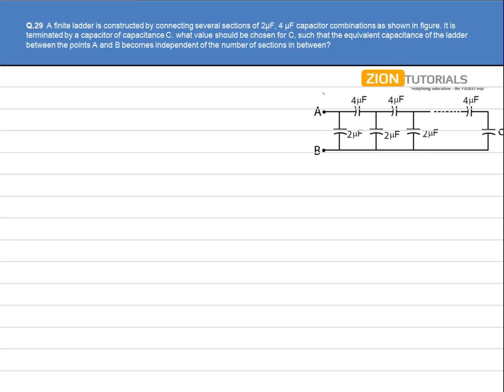A finite ladder is constructed by connecting several sections of 2uF and 4uF capacitor combinations as shown in figure. It is terminated by a capacitor of capacitance C. What value should be chosen for C such that the equivalent capacitance of the ladder between points A and B becomes independent of the number of sections in between?